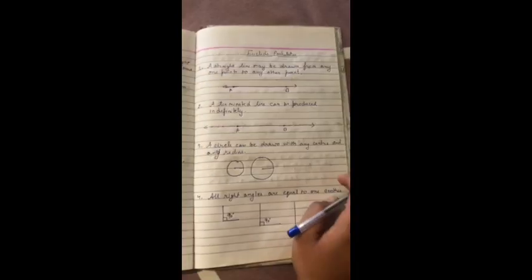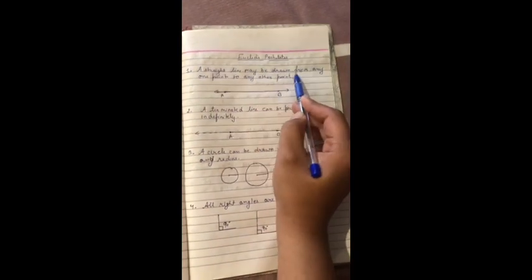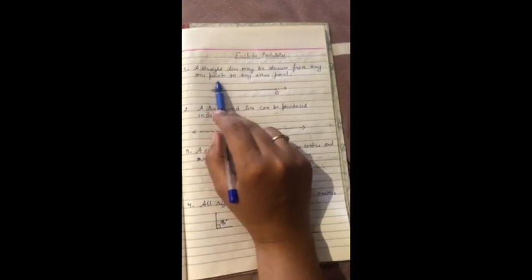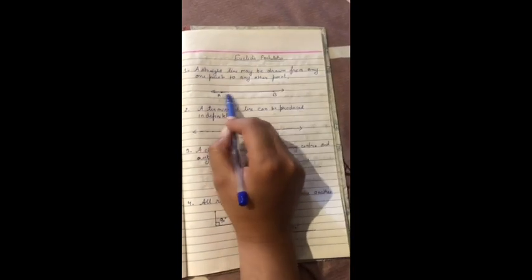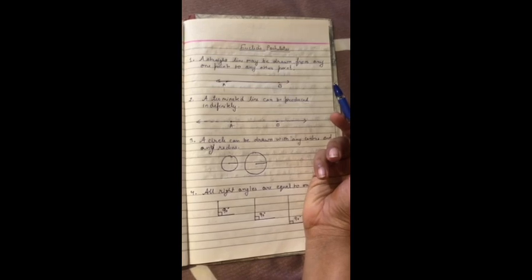Now let us study about the postulates. We have five postulates. First: a straight line may be drawn from any one point to any other point. We can draw from one point to another point. That is a geometrical fact.